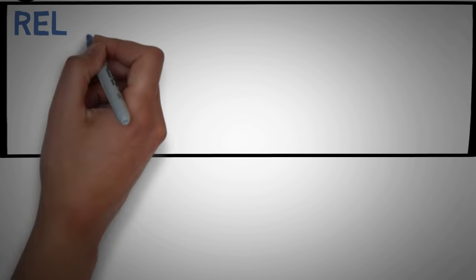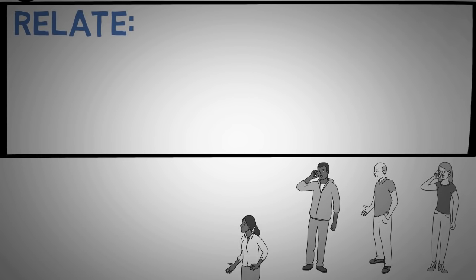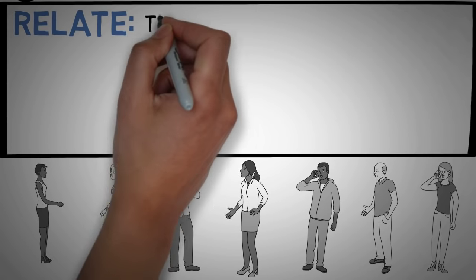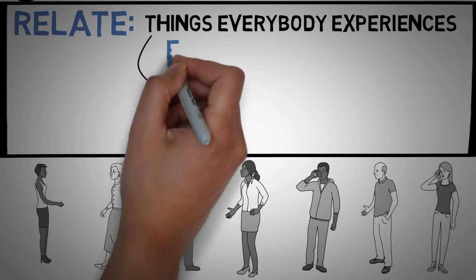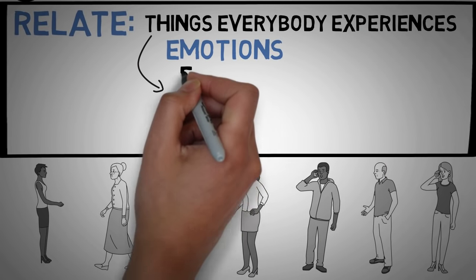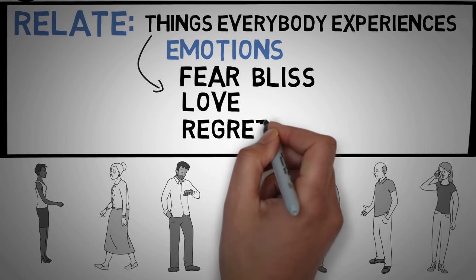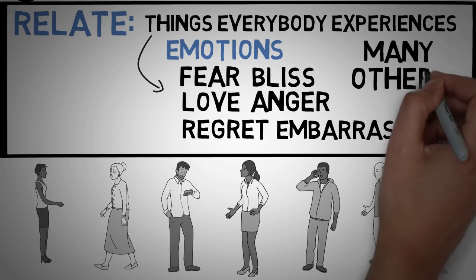And finally, the last step is to relate. We may come from different places with different backgrounds, yet we are all very similar inside. There are things that each and every person experiences—these things that we all have in common that we all go through are our emotions: fear, bliss, love, regret, anger, embarrassment, and many other emotions.